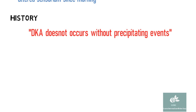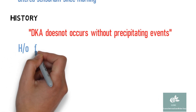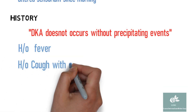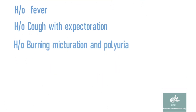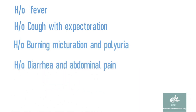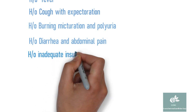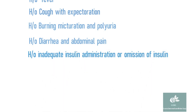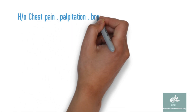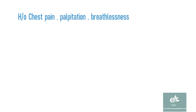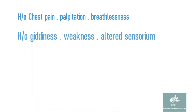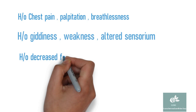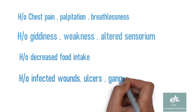To elicit history of intercurrent infection, ask for history of fever, cough with expectoration, burning micturition and dysuria, diarrhea and abdominal pain. Also ask about history of any inadequate insulin administration or omission of insulin. Elicit history for infarction: chest pain and breathlessness for coronary artery disease, and giddiness, weakness, and altered sensorium in case of CVA. Also ask about history of decreased food intake and any infected wound, ulcer, or gangrene.